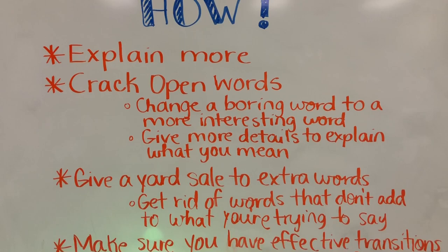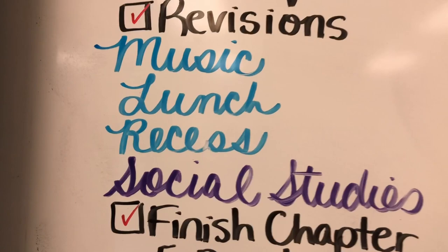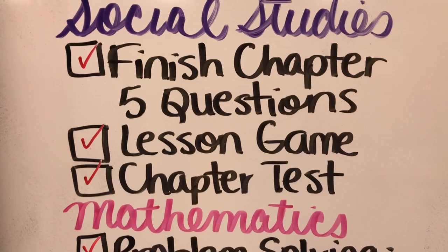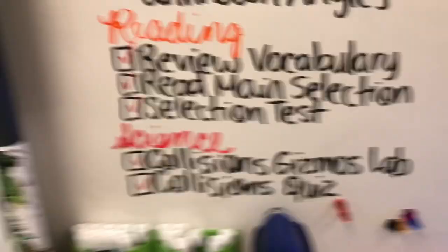And then it was time for music, lunch, and recess. In social studies, we finished those questions for chapter five, we did the lesson game — that was pretty cool — and they took the chapter test, which they did pretty well on. In math, we went over problem solving and unknown angles. We reviewed vocabulary and reading; they read the main selection and took the selection test. And in science, we finished the Collisions Gizmo lab and they did their collisions quiz.